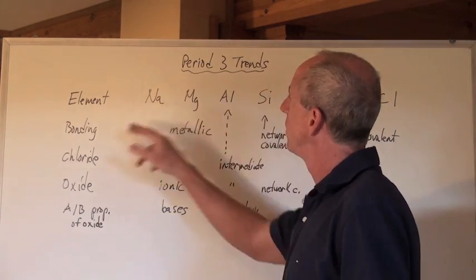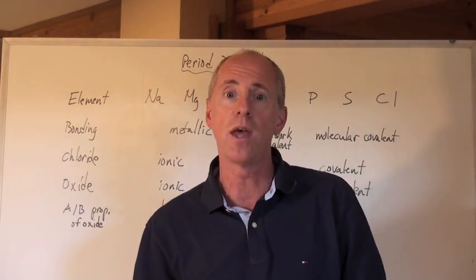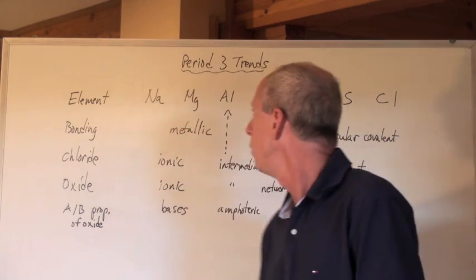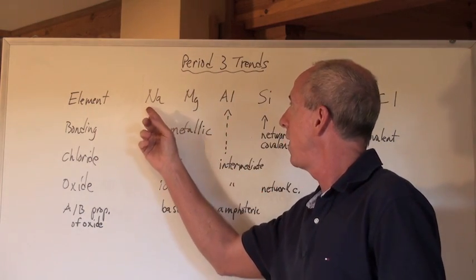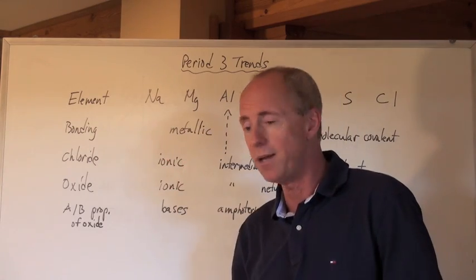What happens when we take those elements, then, and turn them into chlorides, or bond Cl- to them, or just chlorine to them? Well, sodium and magnesium, NaCl and MgCl2, those would be ionic in nature.